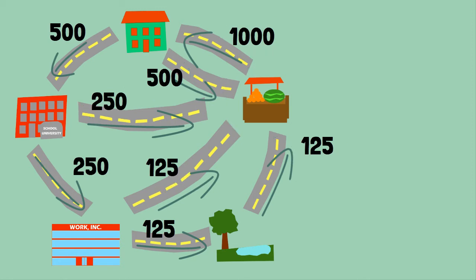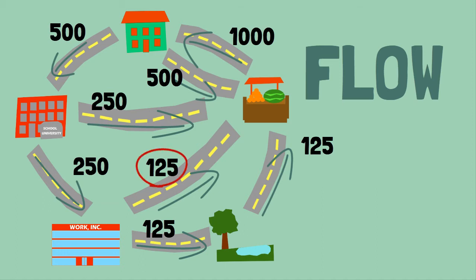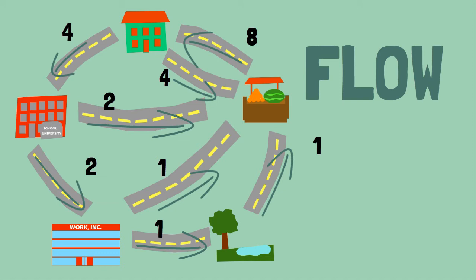These numbers, they're called flow. And then, since these are big numbers and messy to deal with, we can actually divide these by the smallest number for simplicity. Given this network, these numbers would then be our ideal flow.